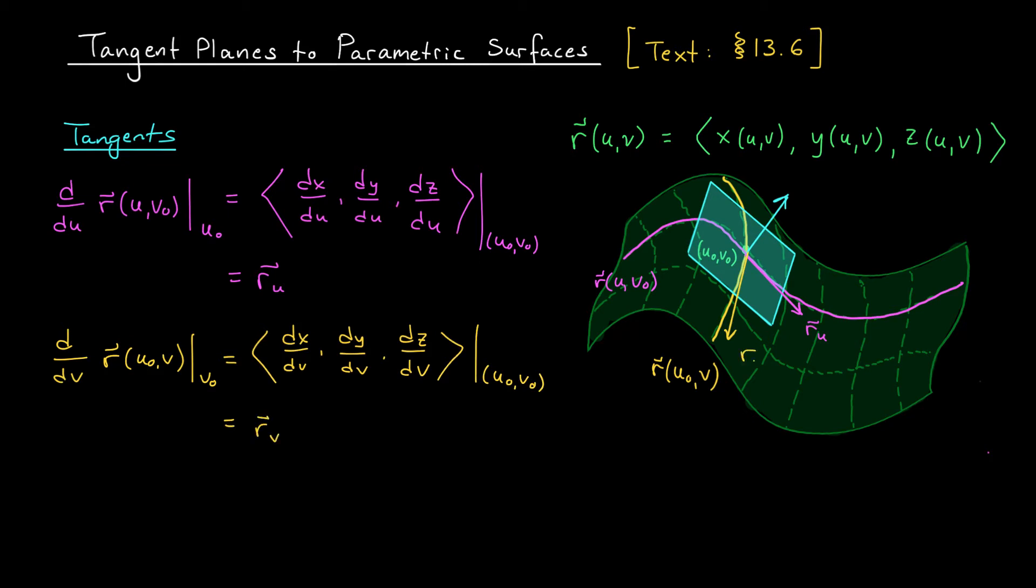If we can calculate both of these tangent vectors, we agree that their cross product will give us a normal vector. So this is the big takeaway. A normal vector to our parametric curve at the point u0 v0 is given by the cross product of r u and r v, where we obtain these two vectors using the expressions above. Let's try an example so you can see how all this works.